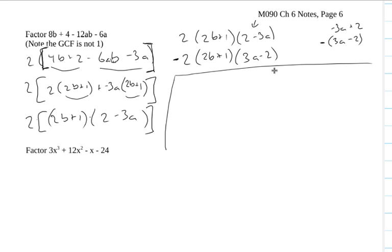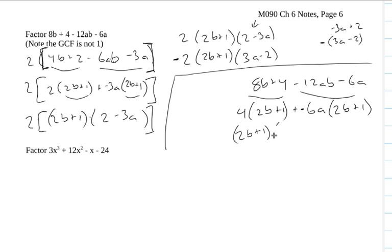Let's see what would happen if we didn't realize that this had a greatest common factor that's not 1. If we had 8b plus 4 minus 12ab minus 6a, and we factored this out here, if we just did factoring by grouping like it is, I would see the greatest common factor here is 4, leaving 2b plus 1. The greatest common factor here is going to be a negative 6a. Again, I'm taking the negative, leaving a 2b plus 1. So the 2b plus 1 is in common between these, and I get 4 minus 6a.